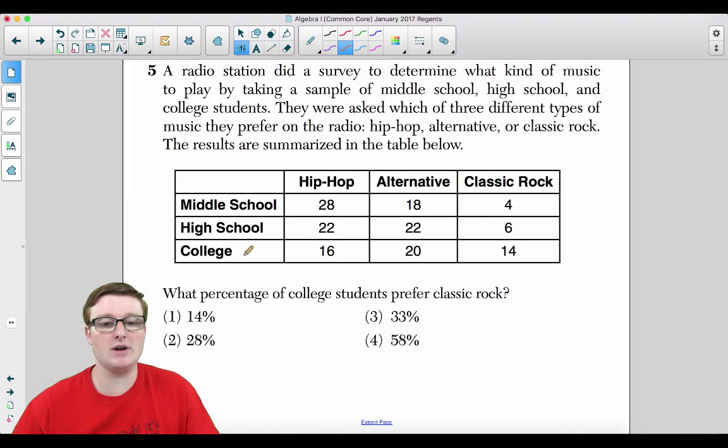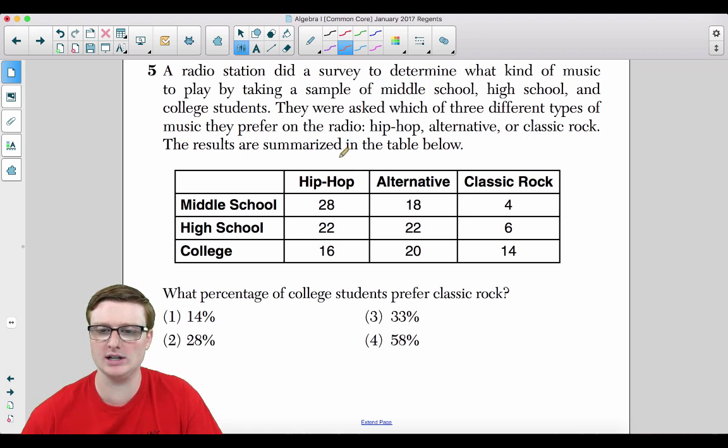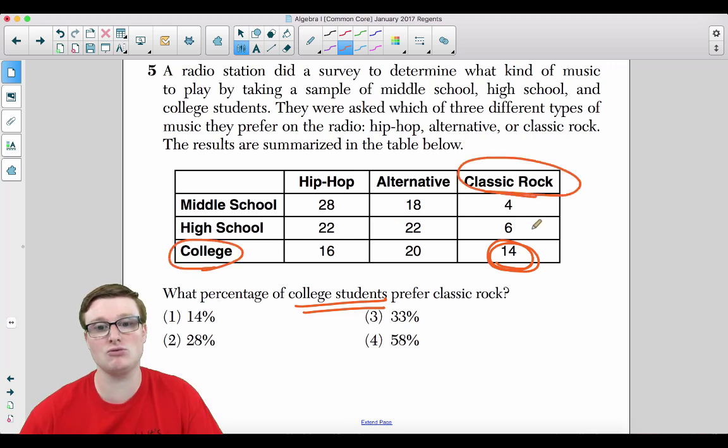Number 5. A radio station did a survey to determine what kind of music to play by taking a sample of middle school, high school, and college students. They were asked which of the three different types of music they prefer on the radio, hip hop, alternative, or classic rock. What is alternative music? I don't know what that is. The results are summarized in the table below. What percentage of college students prefer classic rock?